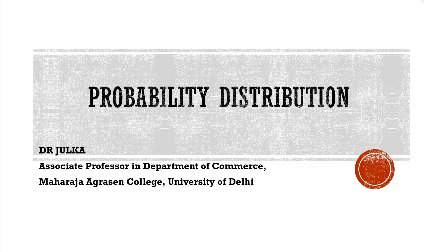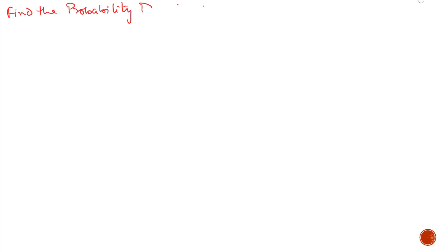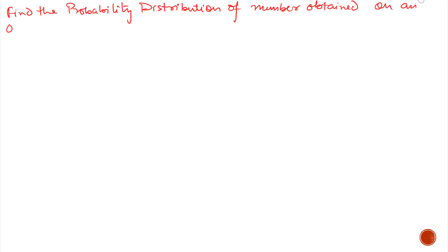Hi everyone, I am Arunjulkar. Today in probability, we will discuss probability distribution. In probability distribution, the sum of probability of all the events always equals 1. Now we can explain this with the help of an example.